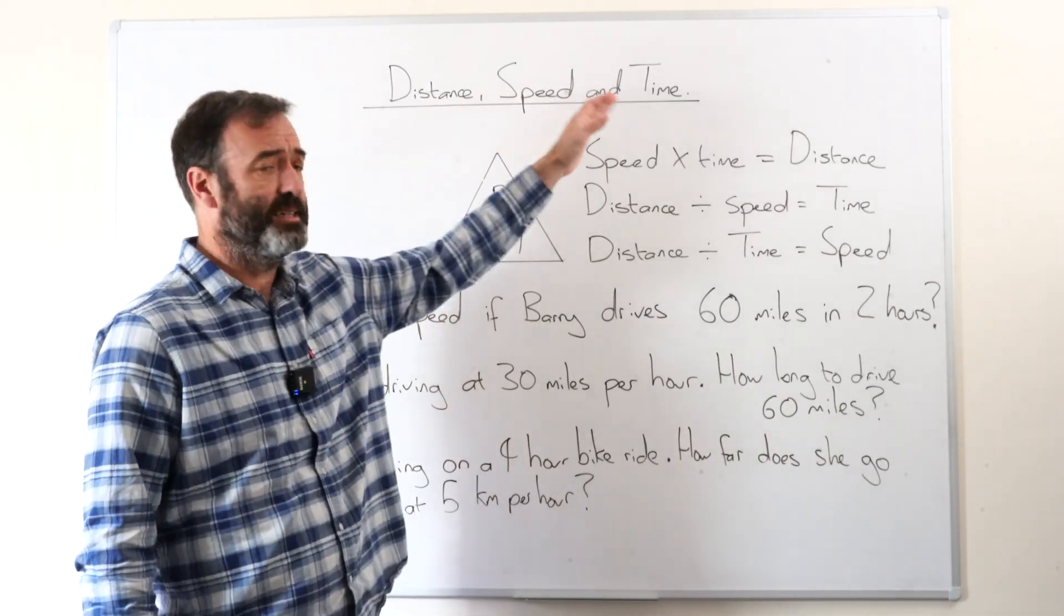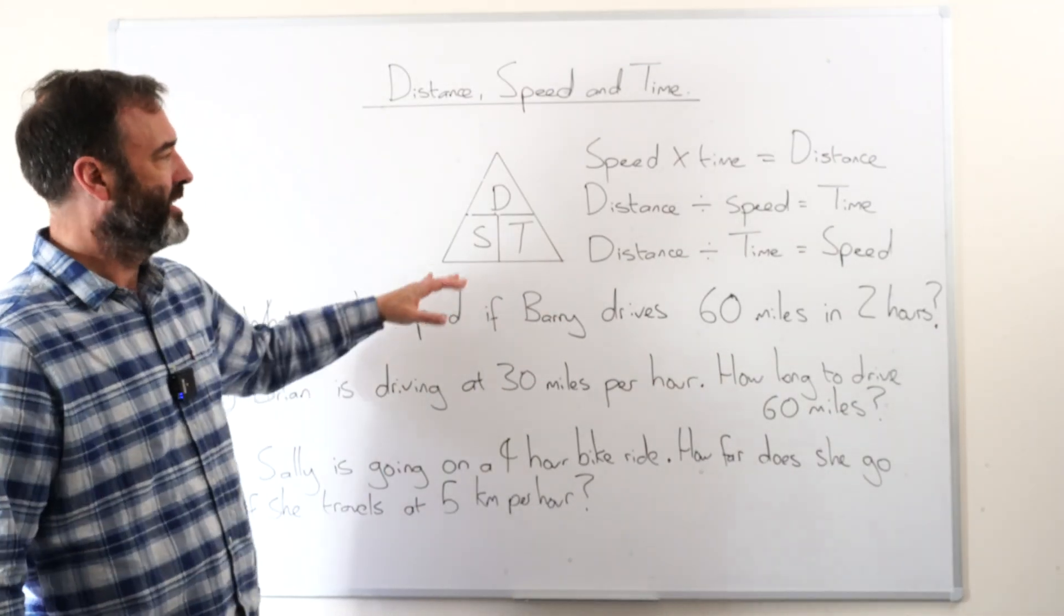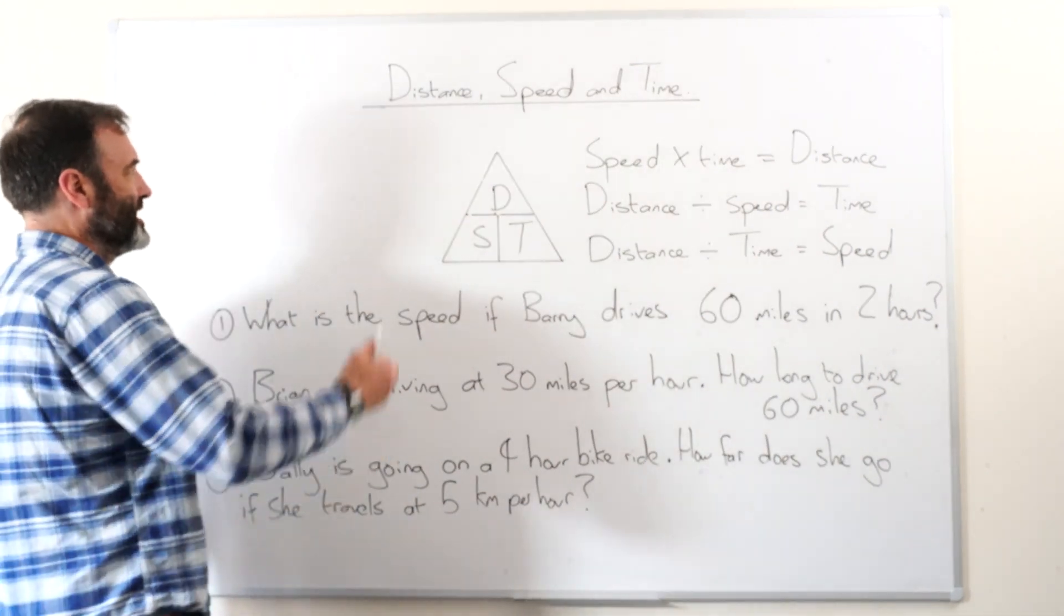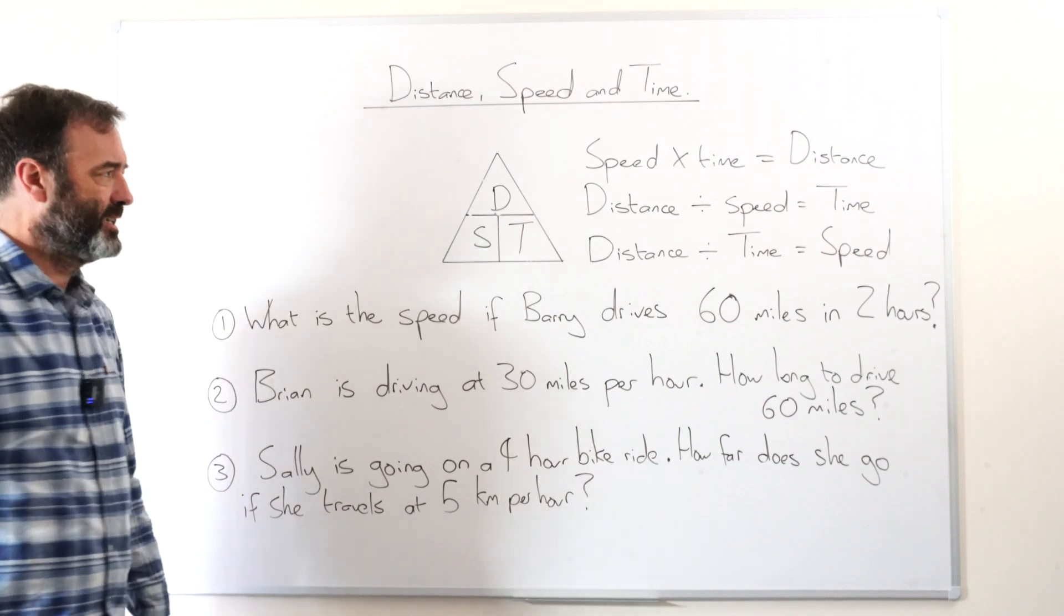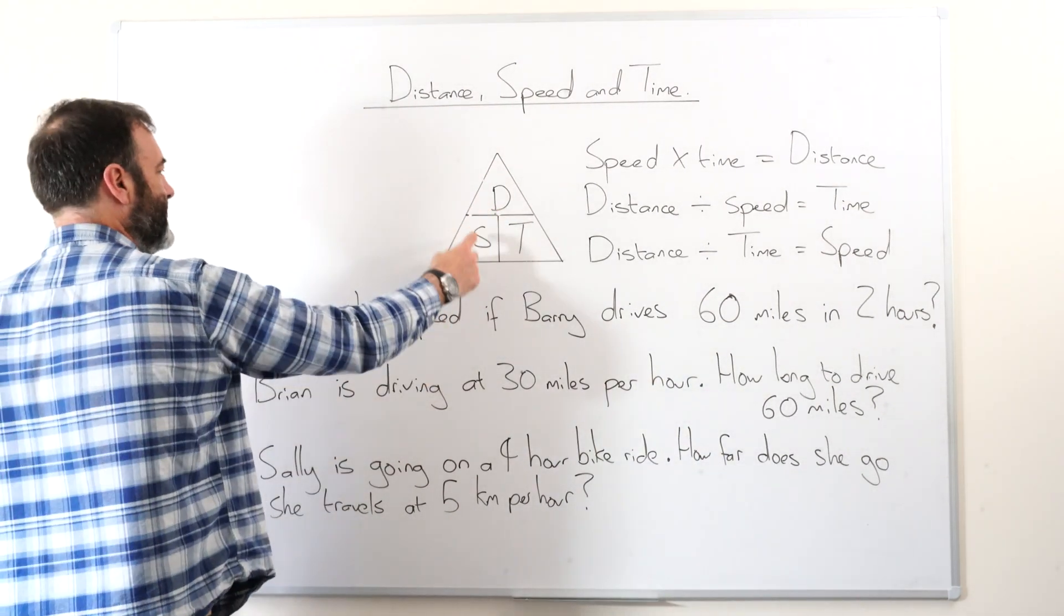Distance, speed and time. Now the really nice thing about these is that they rely on each other, they're relational. So we always say DST and we say DST Pyramid or DST Triangle. So kids can remember this quite easily.